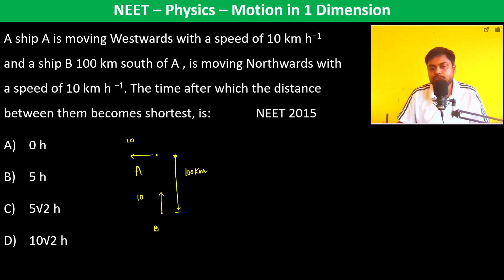So if you see, let us find out velocity of B with respect to A which is going to be VB minus VA which is 10. See this B vector is basically 10 J cap and this A vector is basically minus 10 I cap. So therefore 10 J cap plus 10 I cap which is equal to 10 of I cap plus J cap.